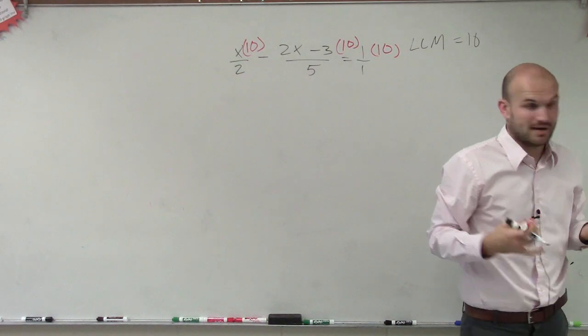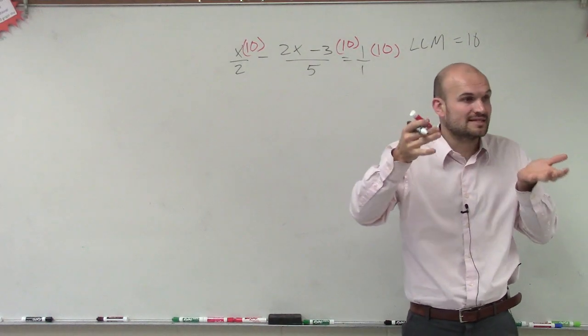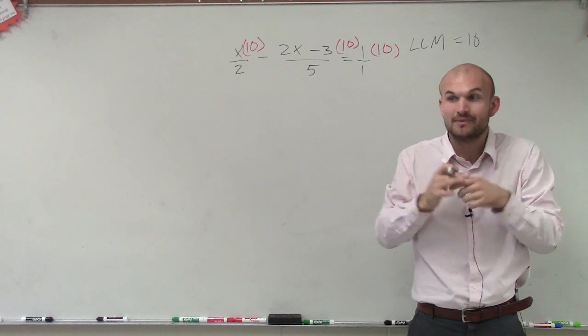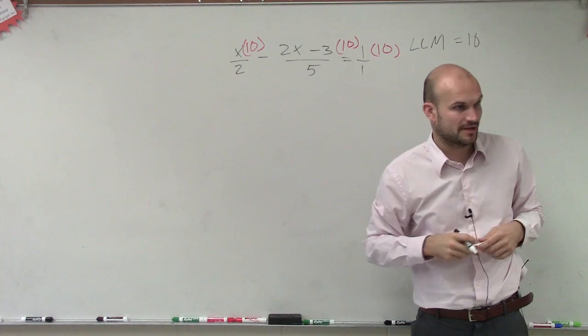This isn't combining. We're not trying to multiply the least common multiple on the top and bottom to combine them. I'm trying to get rid of my denominators now.